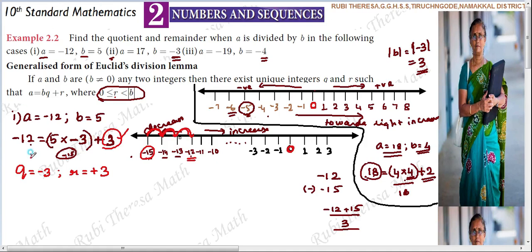We can verify using the formula: A equals B into Q plus R. Substituting: minus 12 equals 5 into minus 3 plus 3. So Q equals minus 3 and R equals 3, which confirms our answer.